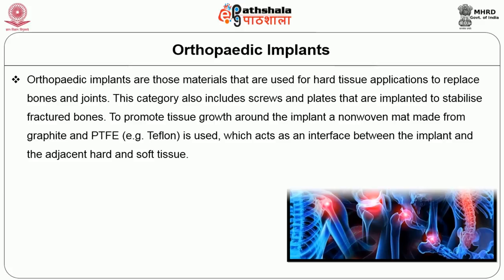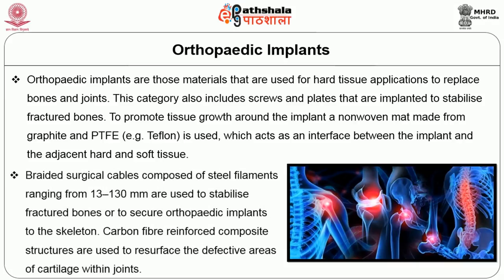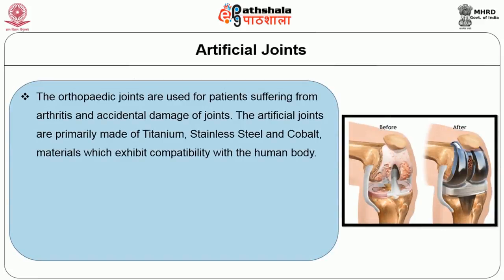Orthopedic implants are materials used for hard tissue applications to replace bones and joints. This category also includes screws and plates that are implanted to stabilize fractures. To promote tissue growth around the implant, a non-woven mat made out of graphite or PTFE is used, which acts as an interface between the implant and adjacent hard and soft tissue. Braided circular cables composed of steel filament ranging from 13 to 130 mm are used to stabilize fracture bones or to secure orthopedic implants to the skeleton. Carbon fiber-reinforced composite structures are used to resurface defective areas and cartilage within the joints.